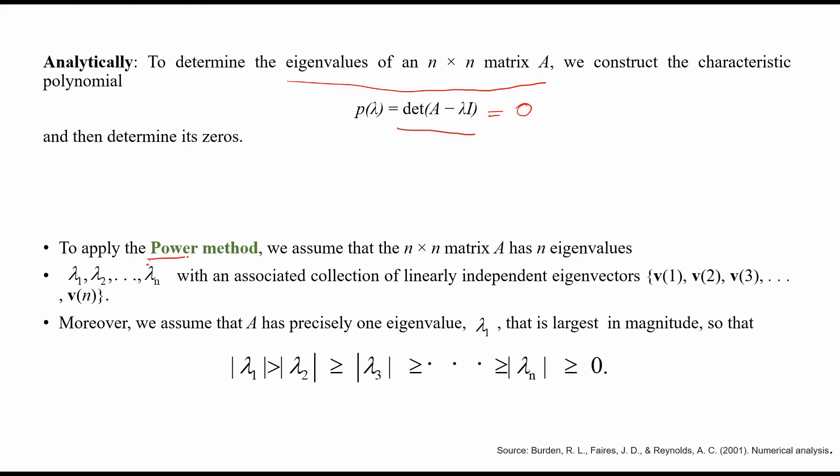To apply the power method, we assume that the n × n matrix A has n eigenvalues λ₁, λ₂, ..., λₙ with an associated collection of linearly independent eigenvectors v(1), v(2), v(3), ..., v(n).